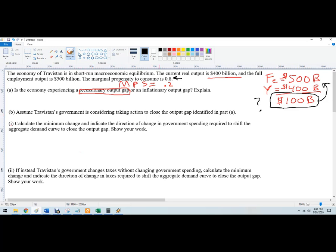Travistan's government is considering taking action to close the gap. They want to increase GDP by $100 billion. Calculate the minimum change in government spending. We want $100 billion of growth. What we don't know is how much spending they would have to do. I'm going to use x as the spending and multiply that by the multiplier.